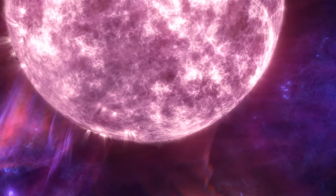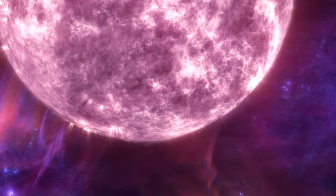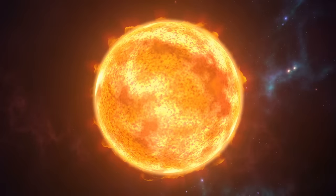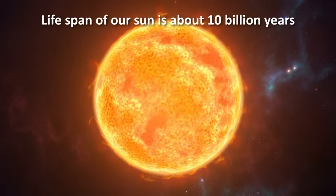Larger and more massive stars tend to be hotter and brighter, but also have shorter lifespans compared to smaller stars. For example, the lifespan of our Sun, a medium-sized star, is about 10 billion years. It's about halfway through its life right now.